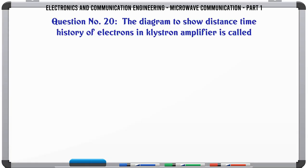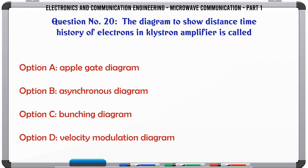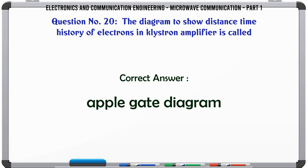The diagram to show distance time history of electrons in Klystron amplifier is called: A. Appelgate diagram, B. Asynchronous diagram, C. Bunching diagram, D. Velocity modulation diagram. The correct answer is Appelgate diagram.